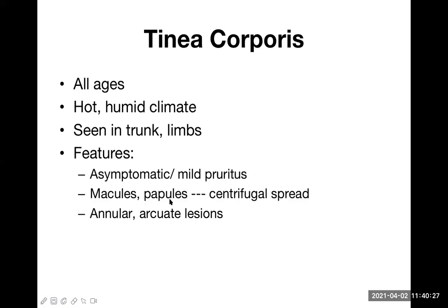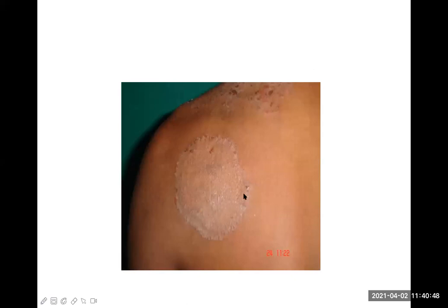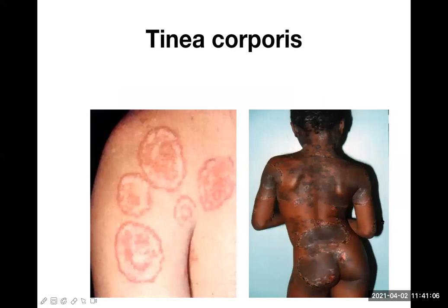Common features of tinea corporis include mild pruritus, or it may be completely asymptomatic initially — the patient often notices the lesion visually rather than by symptoms. There are macules and papules at the edge, centrifugal spread, and the shape is annular or arcuate. Looking at images, the central clearing and active peripheral involvement represent typical ringworm — dermatophyte lesion. Severe types can affect almost the whole body.